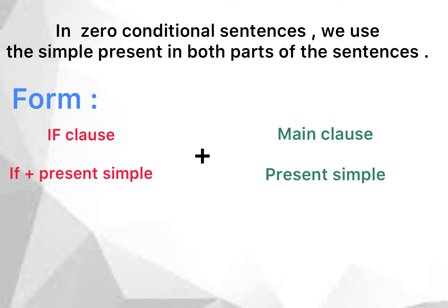In zero conditional sentences we use the simple present in both parts of the sentence. The first part is the if clause, which is the condition, and the second part is the main clause, which is the result. The form of zero conditional: if clause plus main clause. The if clause consists of 'if' plus simple present, and the main clause is simple present only.